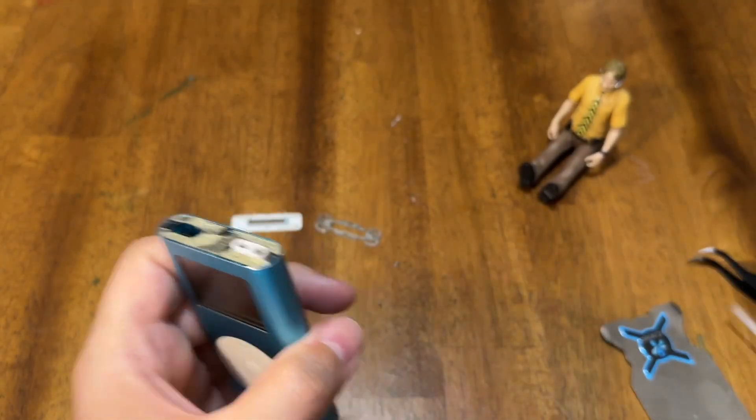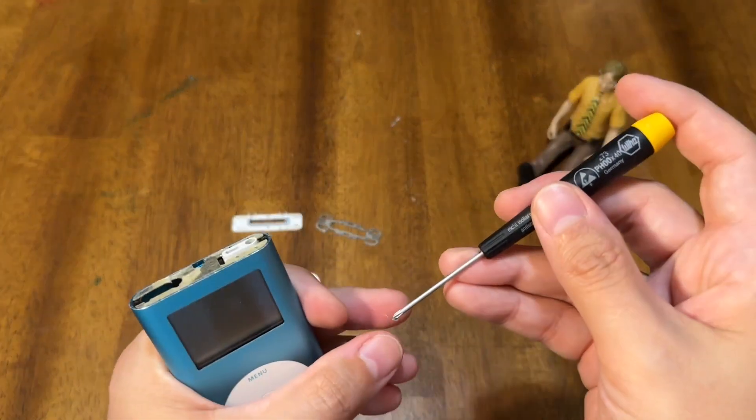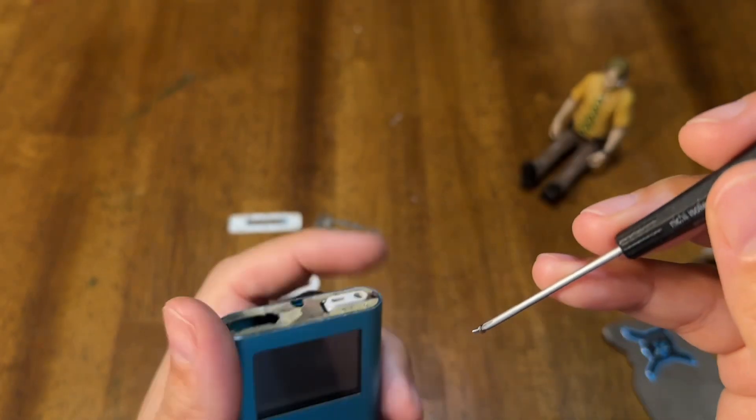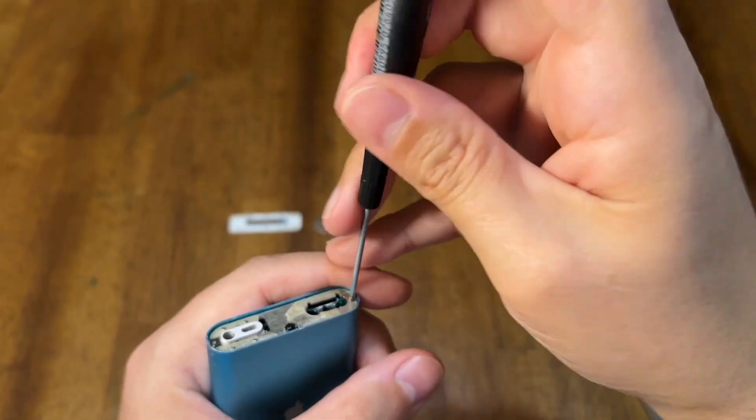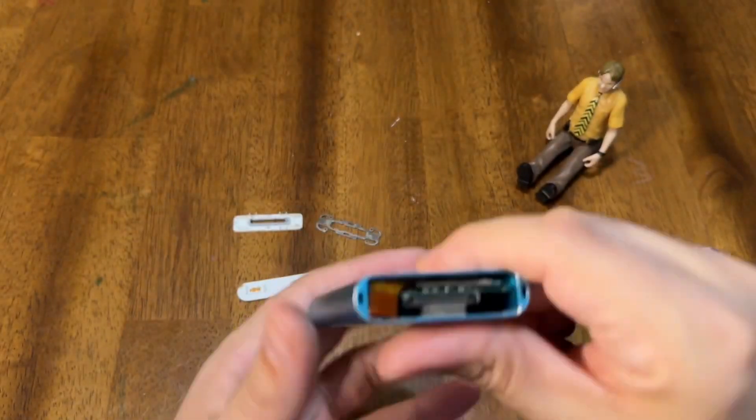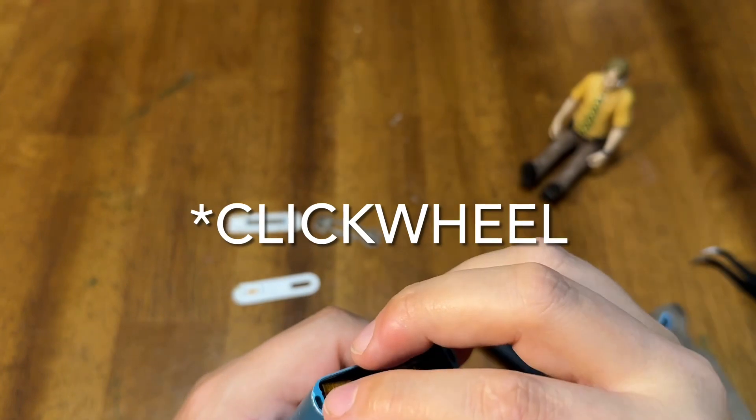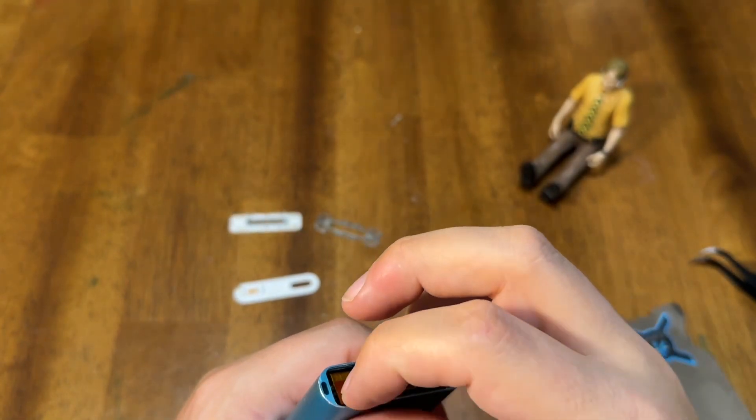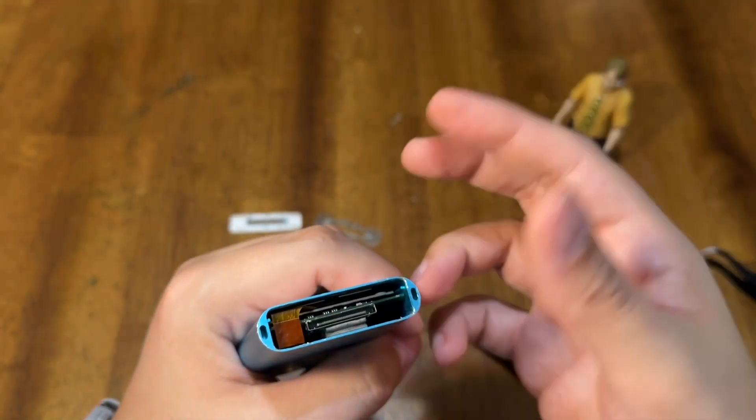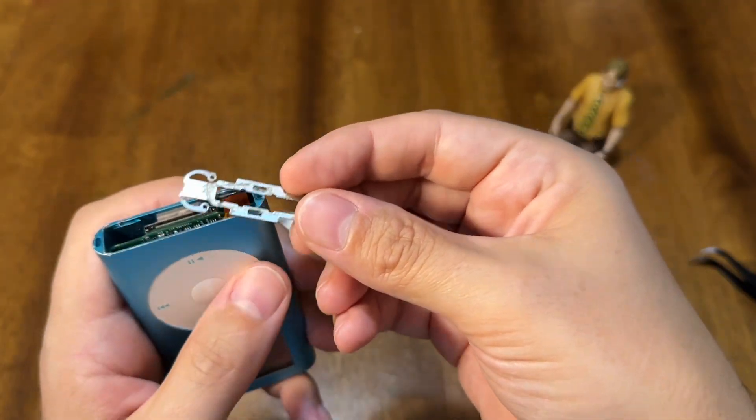Now we're going to take our two screws. And like I said, they're the same. It doesn't matter which way you go. And you want to screw these down. Then you can go ahead and plug your connector in for the scroll wheel. It just pushes straight down. Seats right in there.